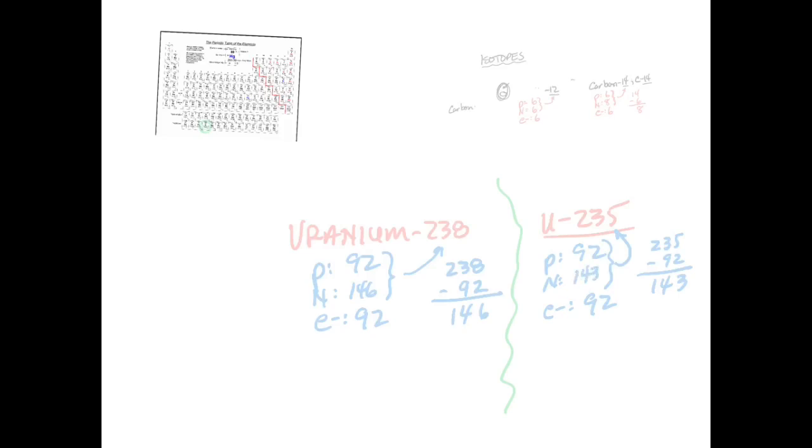So the number of neutrons in the isotope of uranium that has a mass of 235 is 143. All right, so there you go. We've got two different isotopes of uranium and they have different numbers of neutrons. All right, you guys can get started on the third part of that worksheet. Thank you very much.